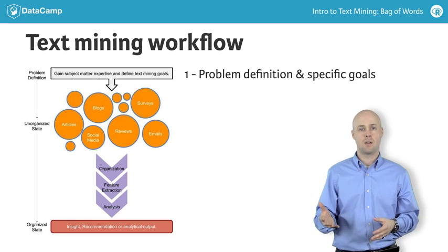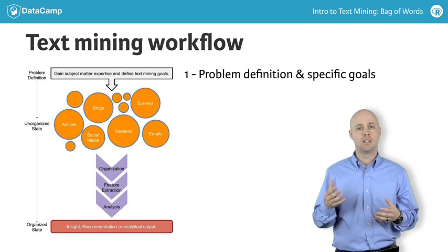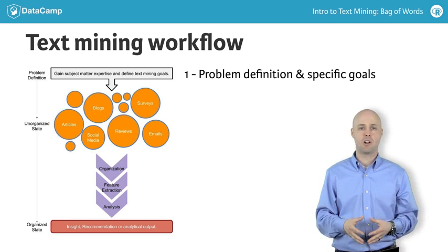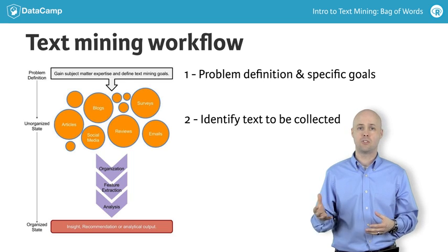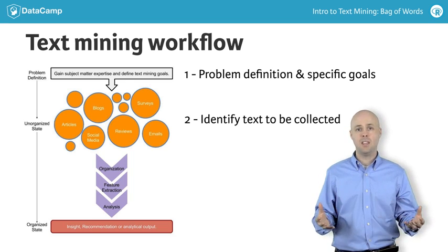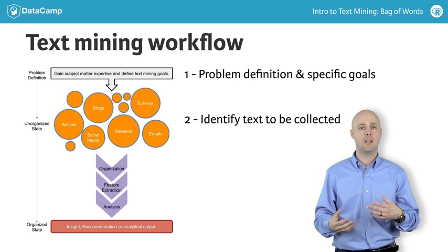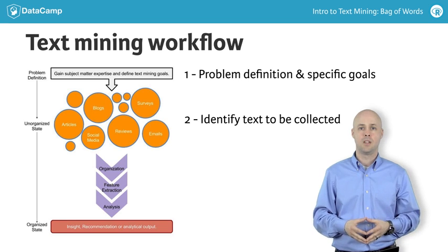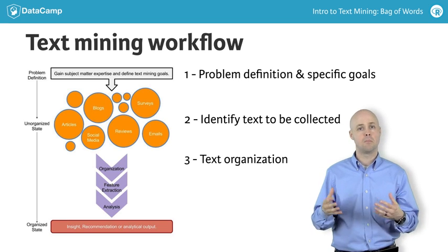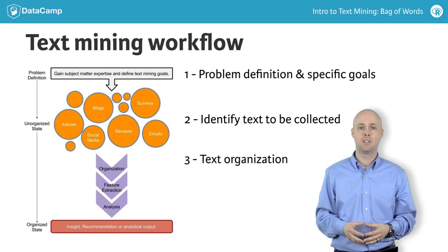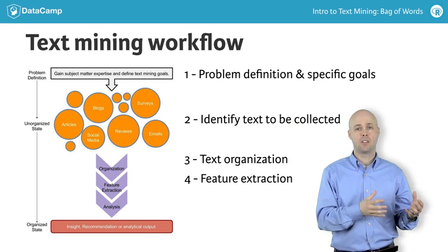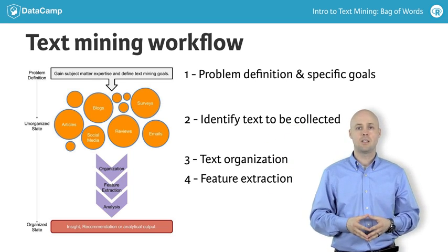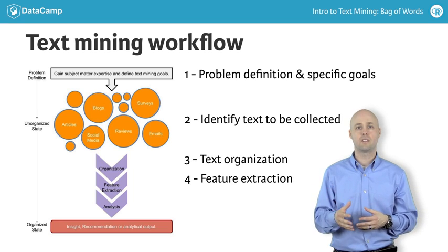The first step involves problem definition, which lays the foundation for your text mining project. Next is defining the text you will use as your data. As with any analytical project, it is important to understand the medium and data integrity because these can affect outcomes. Next, you organize the text, maybe by author or chronologically. Step four is feature extraction — this can be calculating sentiment or, in our case, extracting word tokens into various matrices.